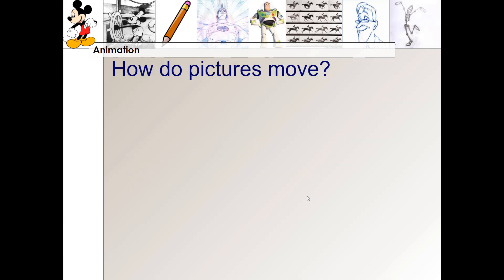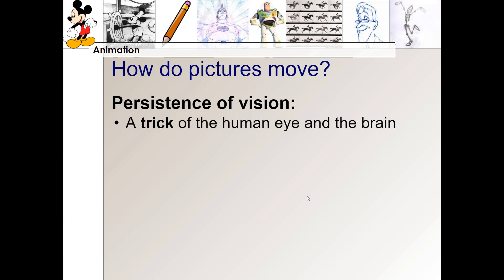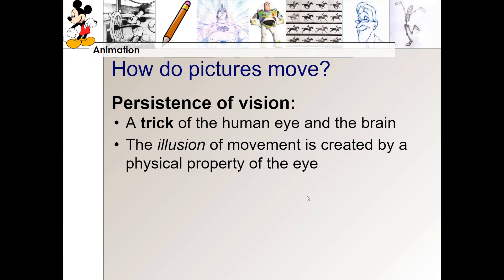So how do pictures move? How do we create animation and make it look like individual frames are actually moving? Well, we know the pictures don't actually move — we know it's an illusion. But how does that illusion happen? It's something called persistence of vision. Persistence of vision is a trick of the human eye and the brain when we look at images. It's an illusion created by a physical property of the human eye.